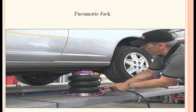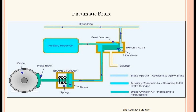Pneumatic jack — we need a jack for lifting the vehicle when replacing a tire, so this is a pneumatic jack. Pneumatic brake: the graphical representation of a pneumatic brake is shown — this is the wheel, this is the brake shoe, and this is connected to the brake cylinder. It is a single acting cylinder with a spring. When the brake is applied, compressed air is sent to the cylinder and the cylinder rod extends.